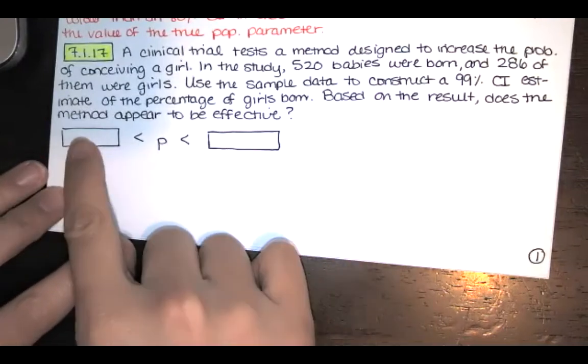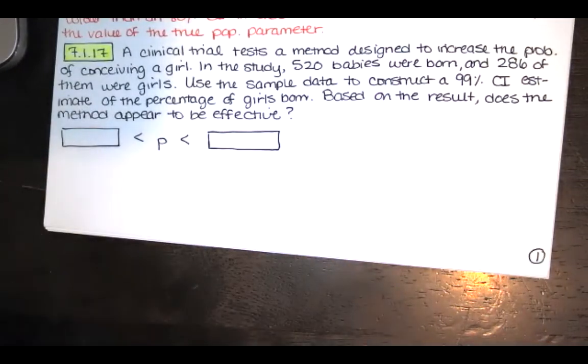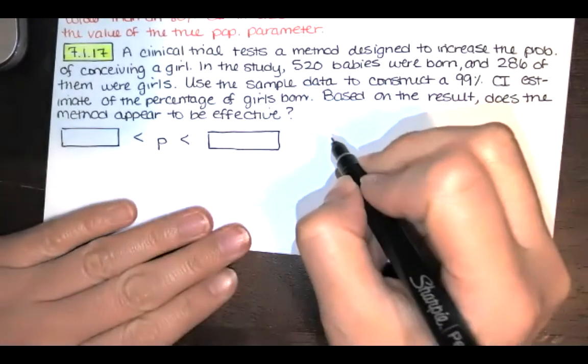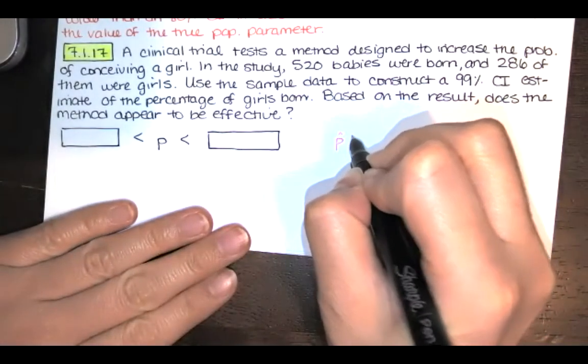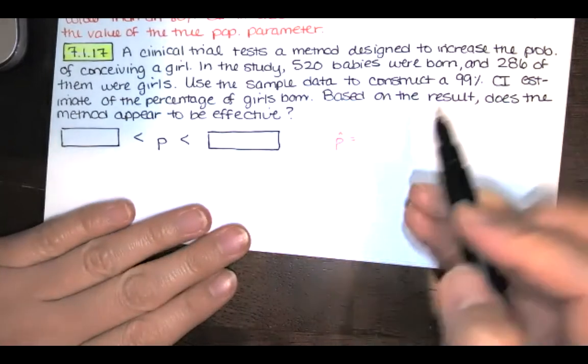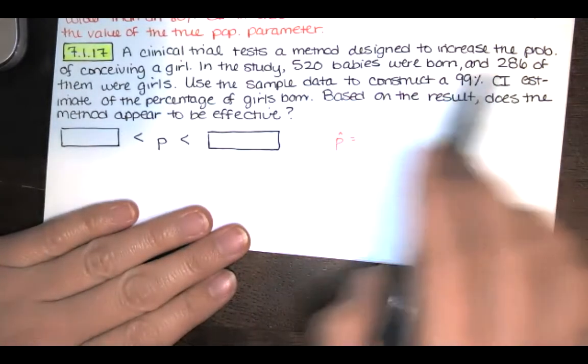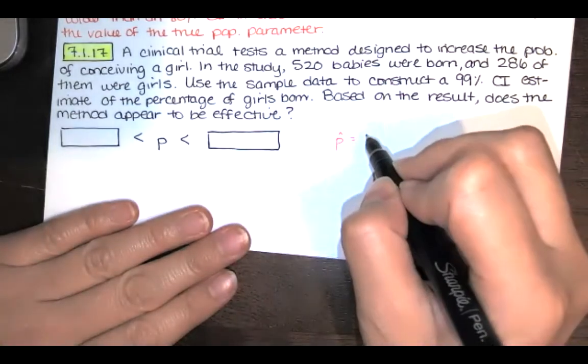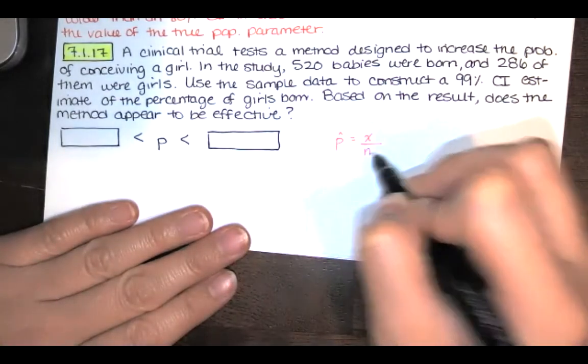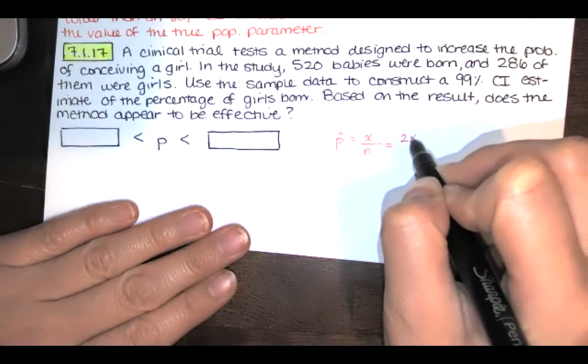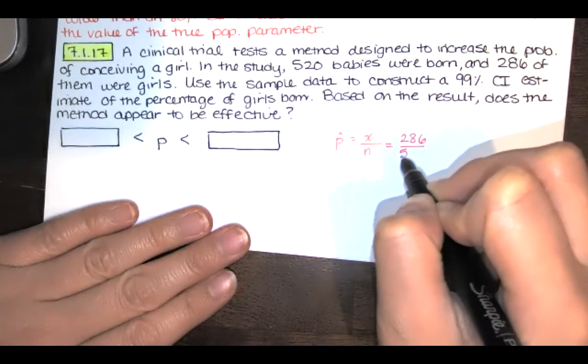In order to find this value and this value, all I need to do is compute two things. I need to compute P hat. That's going to be the proportion of girls out of the 520 babies born. So we typically denote that by x over n. That's 286 over 520.